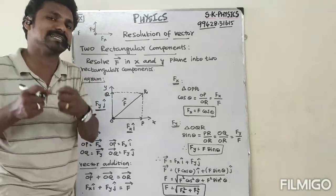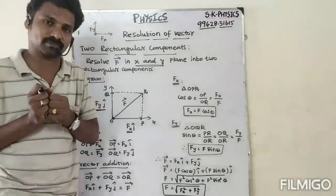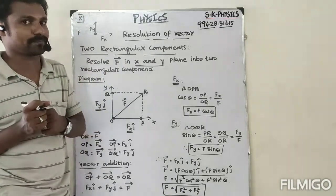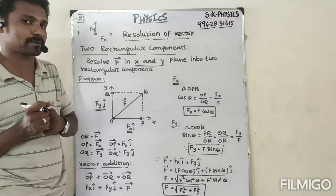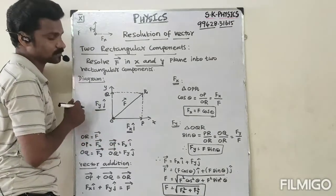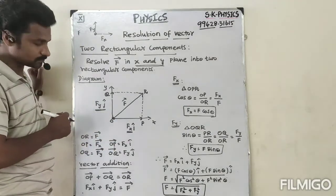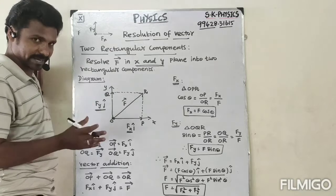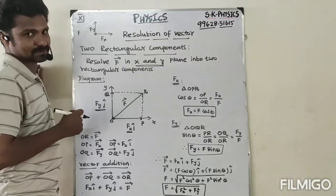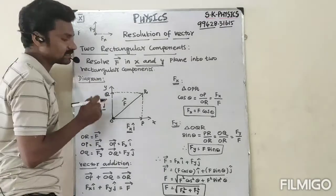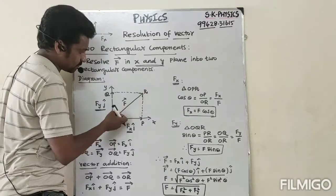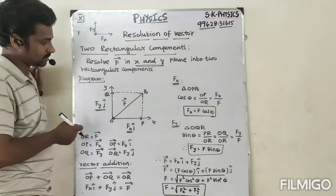Now, x-axis component is Fx and y-axis component is Fy. To calculate the net force, we add these two forces together. That gives us the resultant force, which we generally denote as F vector.